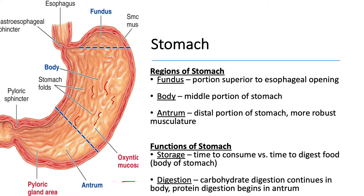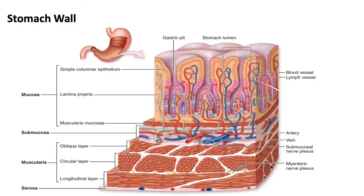The other role of the stomach, of course, is digestion. Carbohydrate digestion continues in the body — while it started in the oral cavity, it continues within the body of the stomach — and protein digestion begins in the antrum. Now let's look at the stomach wall. Since the stomach is part of the GI tract, it's going to have those four characteristic layers, or tunics, that we talked about in the first lecture today.